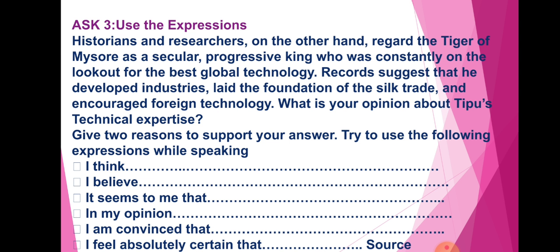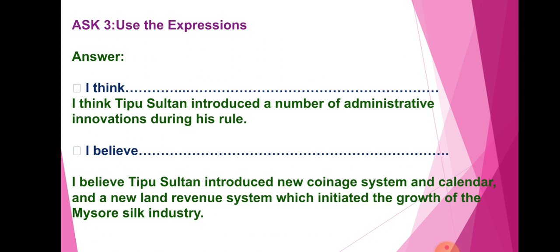What is your opinion about Tipu Sultan as a technology expert? Give reasons to support your answer. Try to use the following expressions while speaking: I think, I believe, I seem, it seems to me that, in my opinion, I am convinced that, I feel absolutely certain that. Sample answers: I think Tipu Sultan introduced a number of administrative innovations during his rule. I believe Tipu Sultan introduced a new coinage system and calendars and a new land revenue system which initiated the growth of the Mysore silk industry.